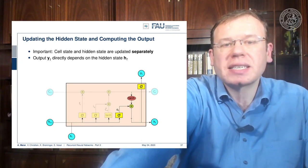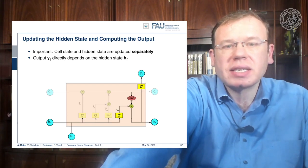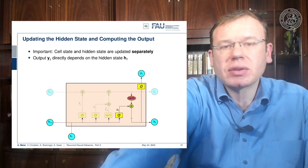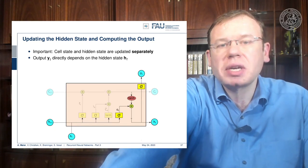So we first update the hidden state by another non-linearity that is then multiplied to the transformation of the cell state. This gives us the new hidden state, and from the new hidden state we produce the output with another non-linearity.